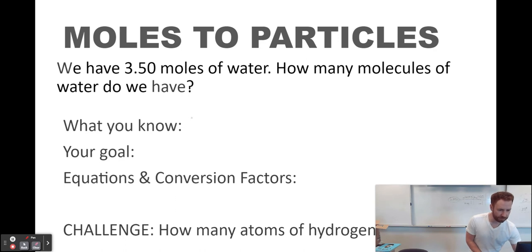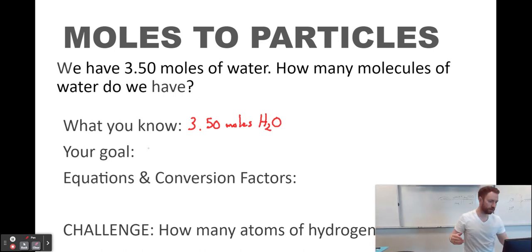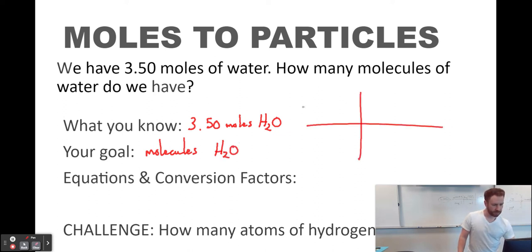We have 3.5 moles of water. We want to know how many molecules of water we have. Now, molecules is just a specific term for a particle of water, right? Because water is a compound. So a single unit of it is a molecule, not an atom. So we want to know molecules of H2O. So we're going to set up dimensional analysis. Start with what we know, 3.50 moles of H2O.